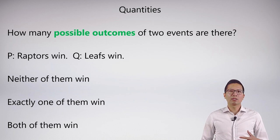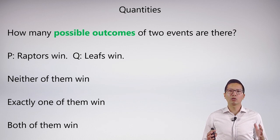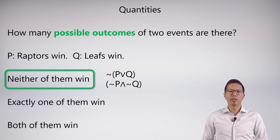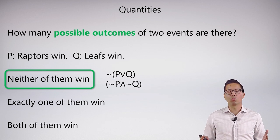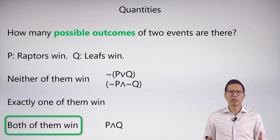Symbolizing these is pretty straightforward — we've already symbolized some of them. Neither of them win is straightforward; we use our neither-nor symbolization. Similarly, symbolizing the fact that both of them could win is also straightforward. If P is 'Raptors win' and Q is 'Leafs win,' both of them winning is just P and Q.